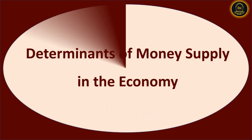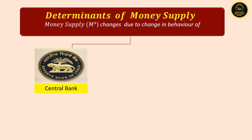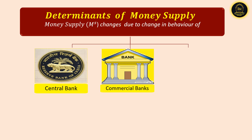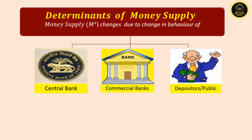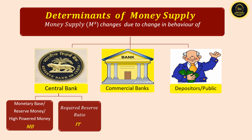Now let us understand the determinants of money supply in detail. There are basically three determinants: number one is the central bank — in India, it is the Reserve Bank of India; number two is the commercial banks; and number three is the depositors or the public. Money supply changes due to the change in behavior of all three determinants. The central bank determinant includes the monetary base — also called reserve money or high-powered money — and the required reserve ratio.